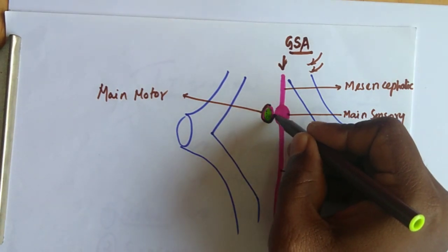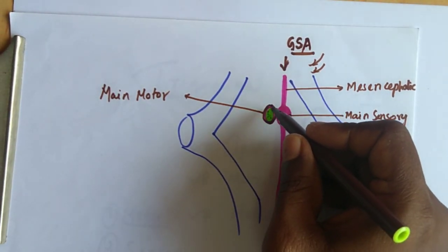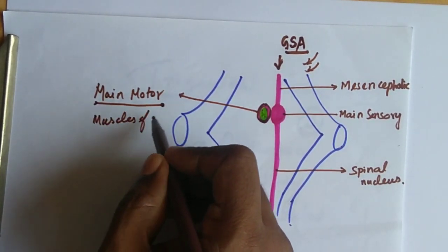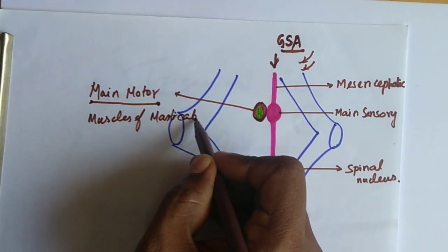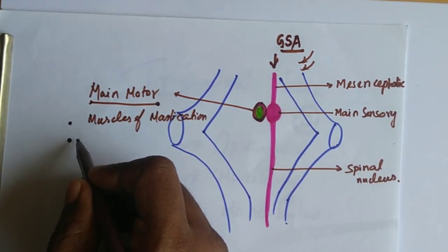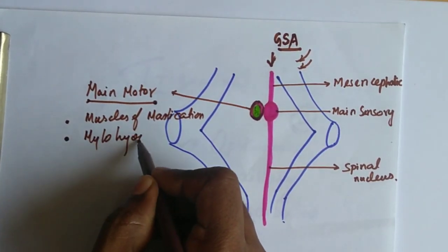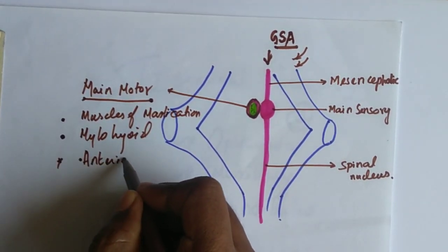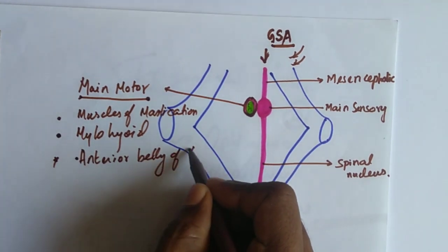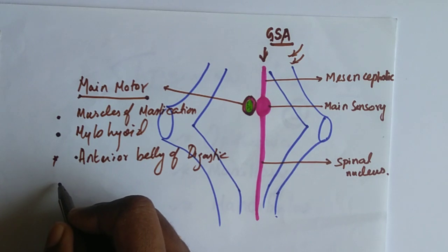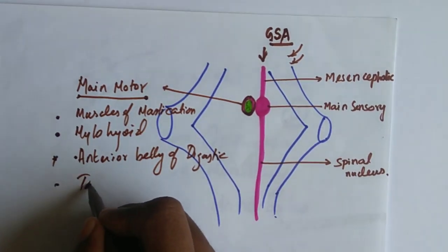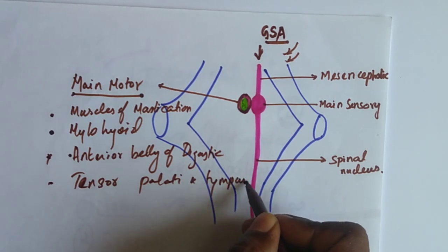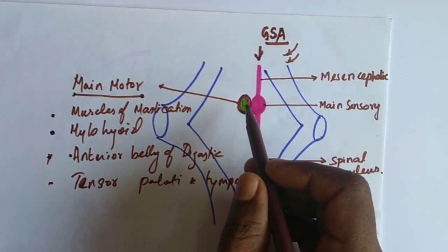The main motor nucleus is located only at the level of the pons, at the posterior aspect of the pons. This main motor nucleus supplies the muscles of mastication and also some muscles of the face like myelohyoid, the anterior belly of digastric, and also tensor palatii and tensor tympani.